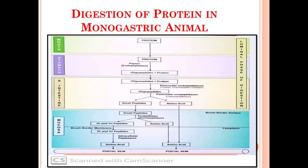The oligopeptides and proteins formed in the stomach will move towards the small intestine. In the small intestine, different enzymes released from the pancreatic juice — which are endopeptidases, for example trypsin, chymotrypsin, and elastase — will convert the rest of the proteins into oligopeptides. Now the total amount of protein ingested is converted into oligopeptides.